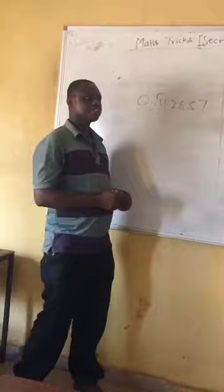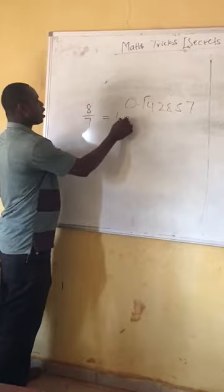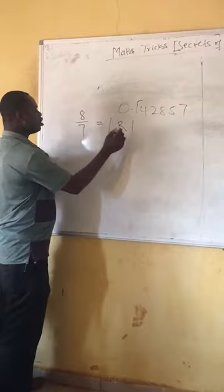For instance, 8 over 7 is actually 1 remainder 1, so it is written as 1.142857.